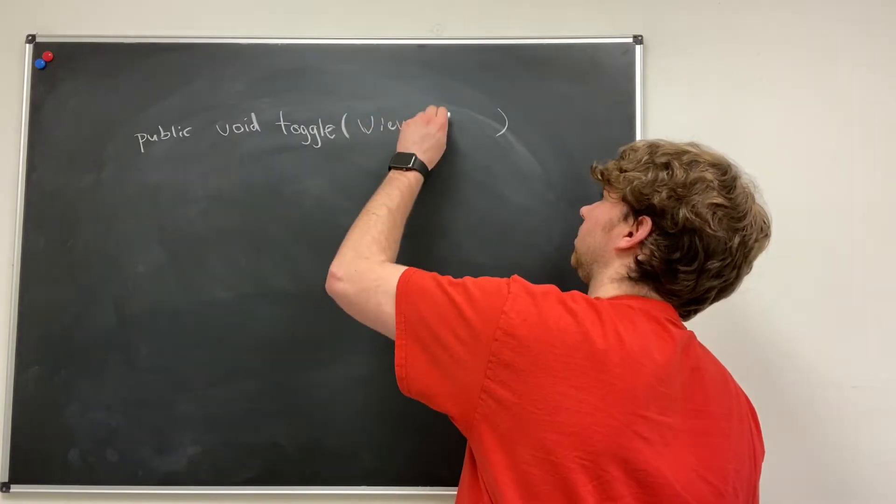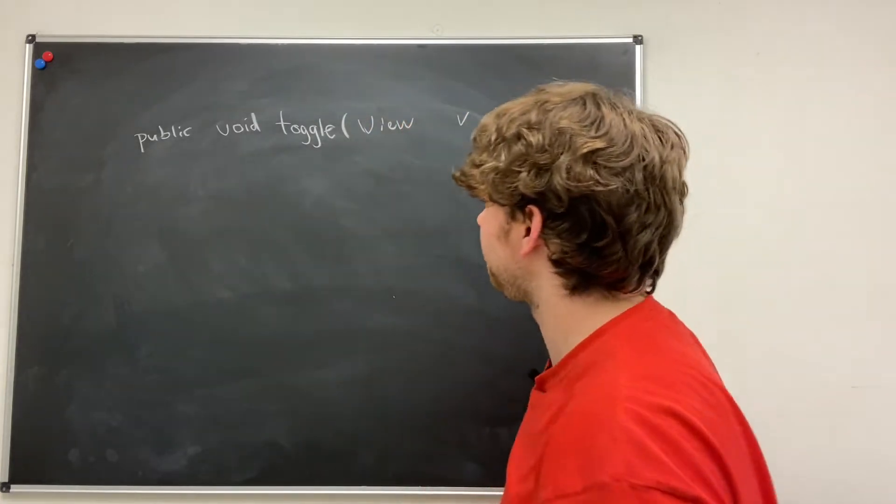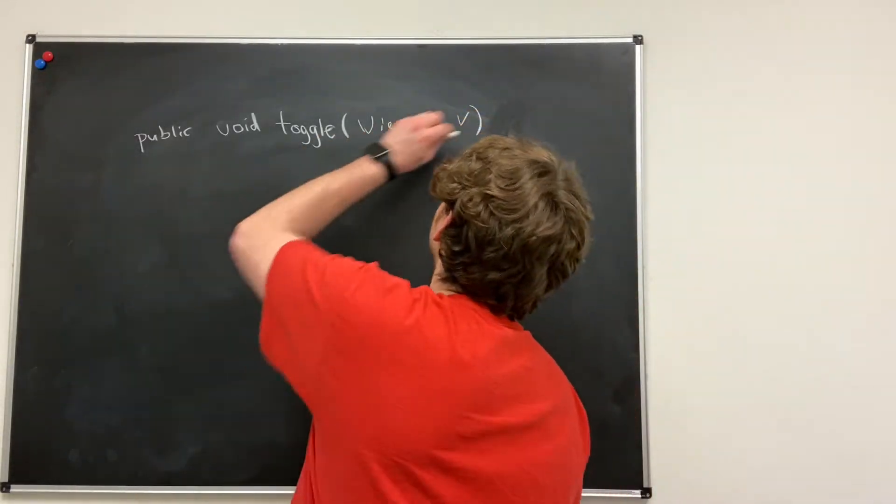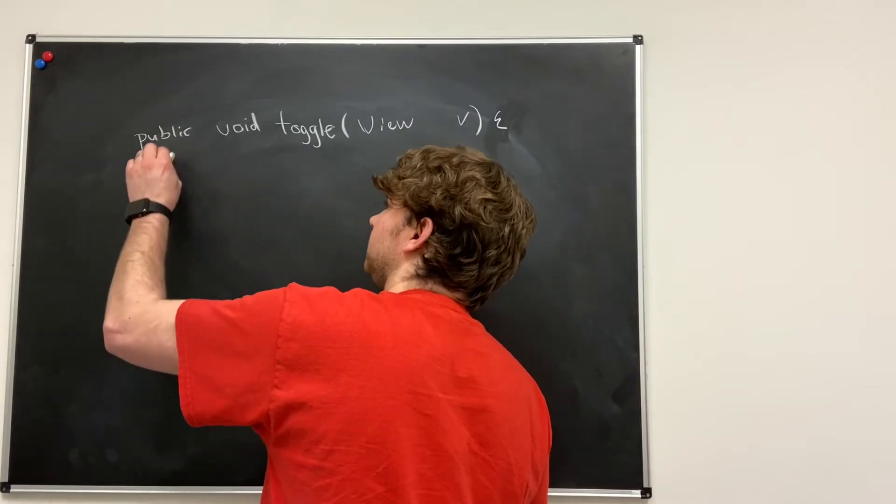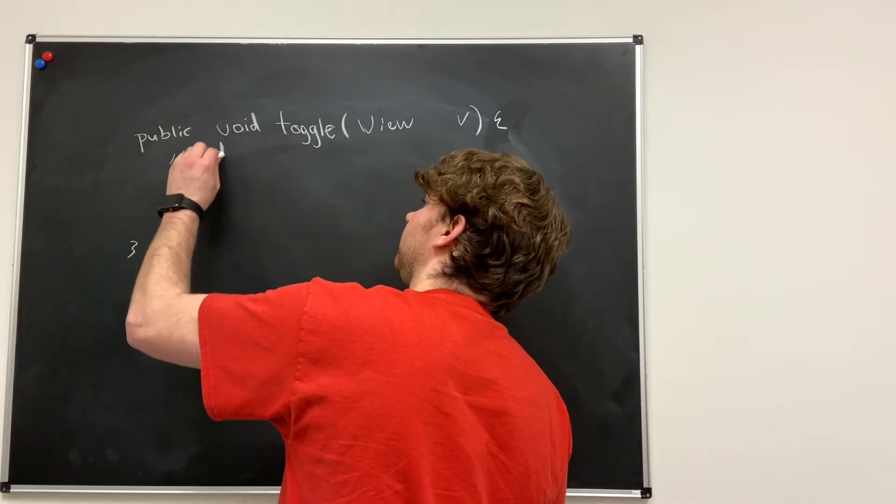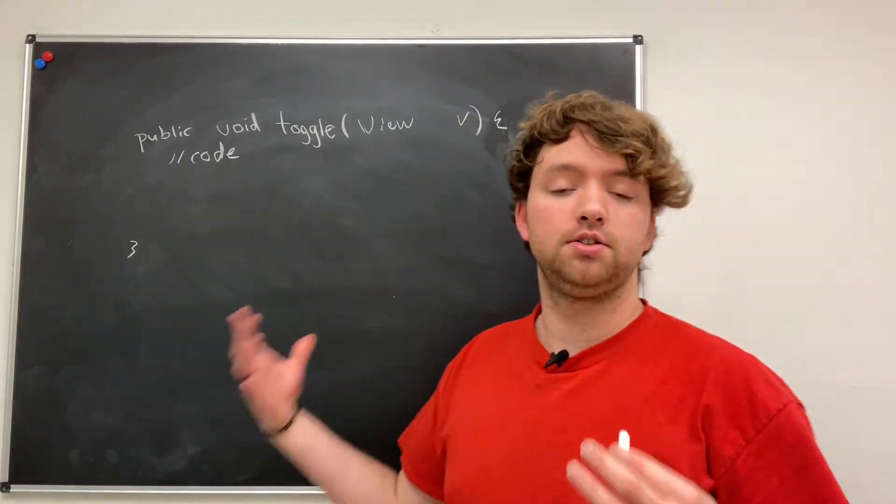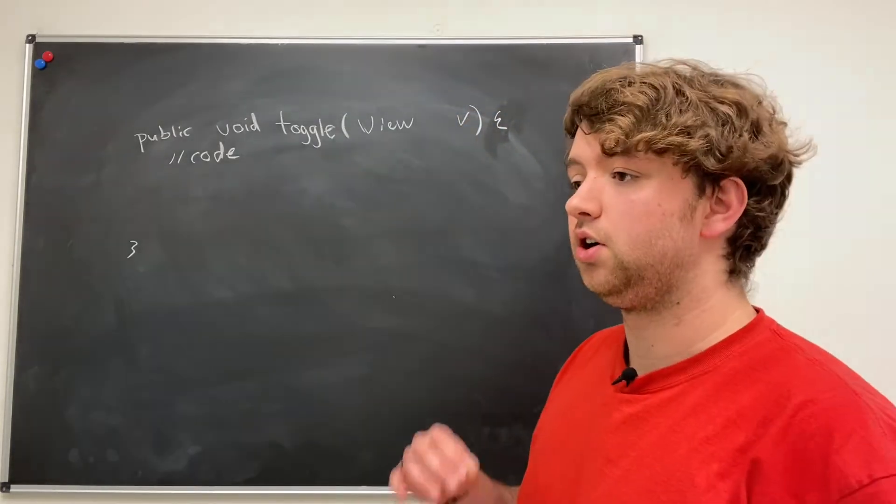View, I don't know, we'll just call it V. Close that parentheses a little closer. Curly brace, curly brace. And then you can put your code in here to do whatever you want the method to do. To toggle the color, toggle whether it's active or whatever.